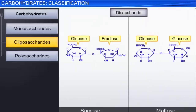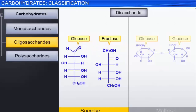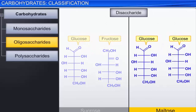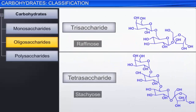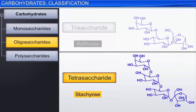On hydrolysis, a molecule of sucrose, commonly called cane sugar or beet sugar, produces a molecule each of glucose and fructose. But a molecule of maltose produces 2 molecules of glucose. Raffinose is a trisaccharide, while stachyose is an example of a tetrasaccharide.